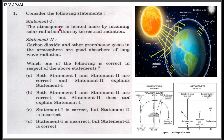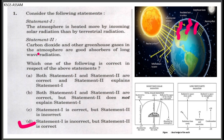Statement 1: the atmosphere is heated more by incoming solar radiation than by terrestrial radiation. The atmosphere is mainly heated from the bottom up. Carbon dioxide and other greenhouse gases are good absorbers of long wave radiation. Terrestrial radiation is long wave radiation, while incoming solar radiation is short wave radiation.